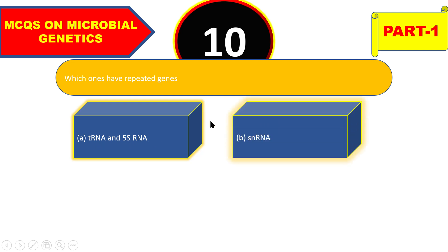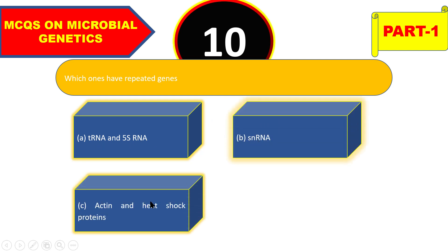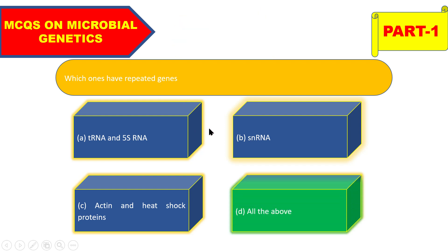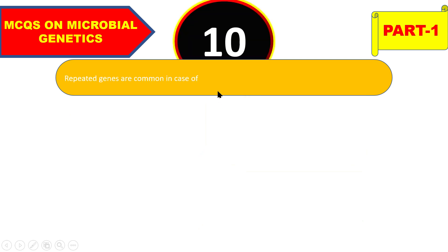Next question: which ones have repeated genes — tRNA and 5S rRNA, snRNA, actin and heat shock proteins, or all of the above? The right answer is all of the above. All of them — tRNA, 5S rRNA, snRNA, actin, and heat shock proteins — have repeated genes.